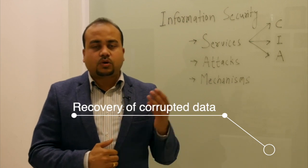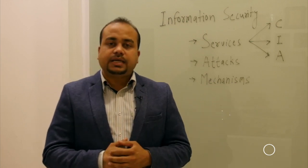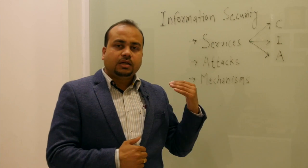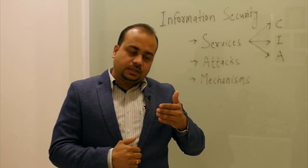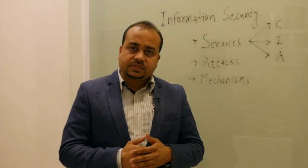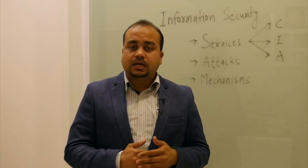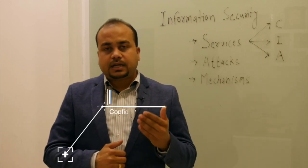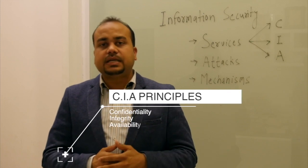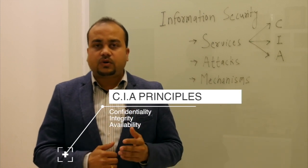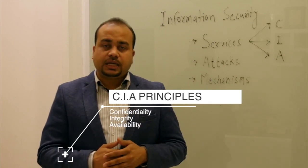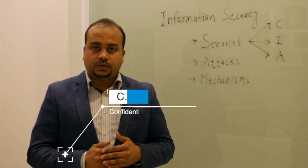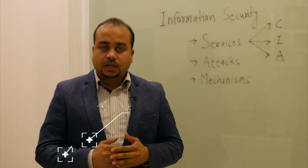We'll talk about three basic ideas in information security. The security services themselves are abbreviated as CIA: C for Confidentiality, I for Integrity, and A for Availability of your information.